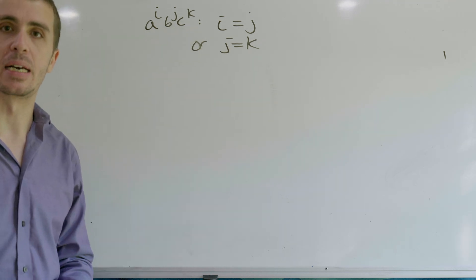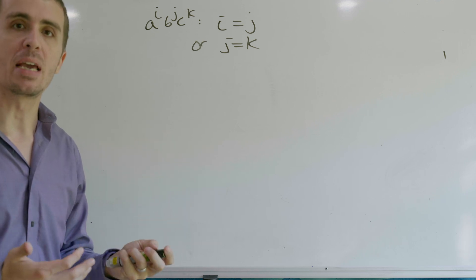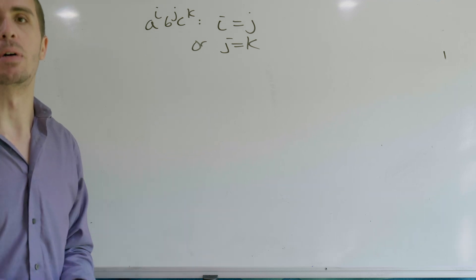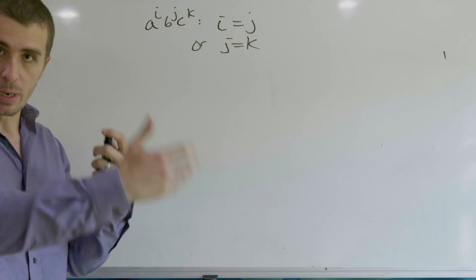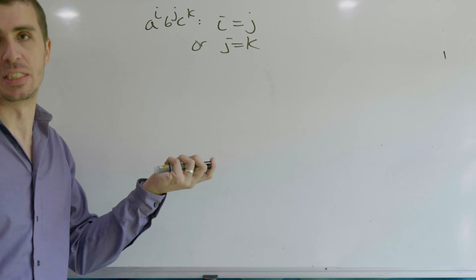This language is actually pretty famous because no matter what grammar you make for it, provably, the grammar must be ambiguous. So we're not going to try to avoid ambiguity here because it's impossible.